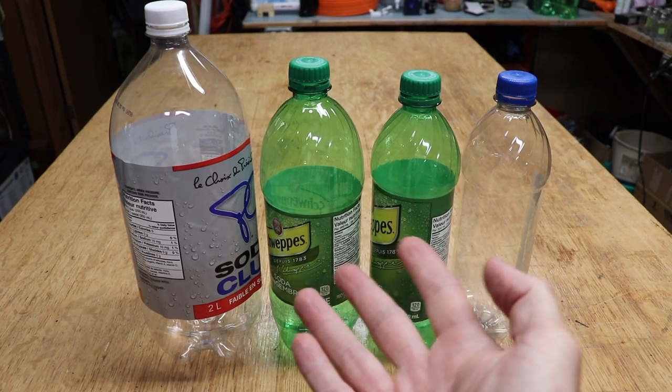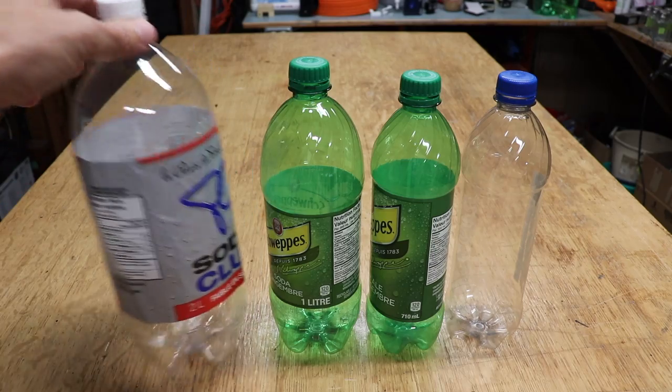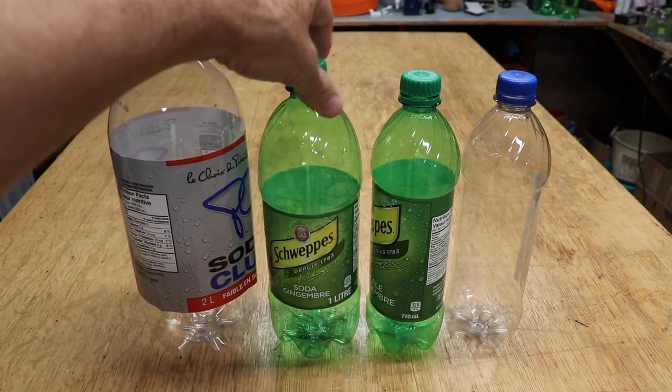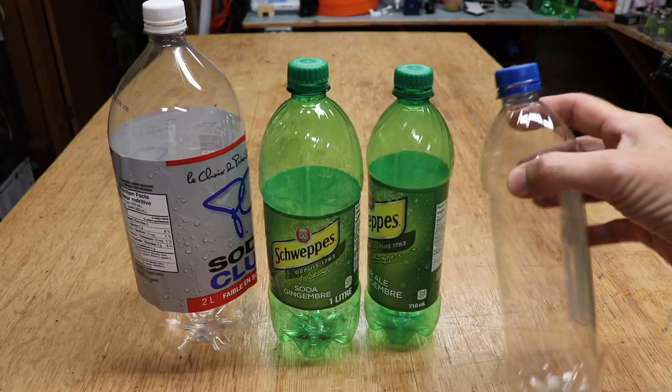You can make a small ant moat or a large ant moat, whatever you like. You can use one of these two-liter pop bottles, a one-liter pop bottle, or one of these smaller ones, and it can be green or clear.